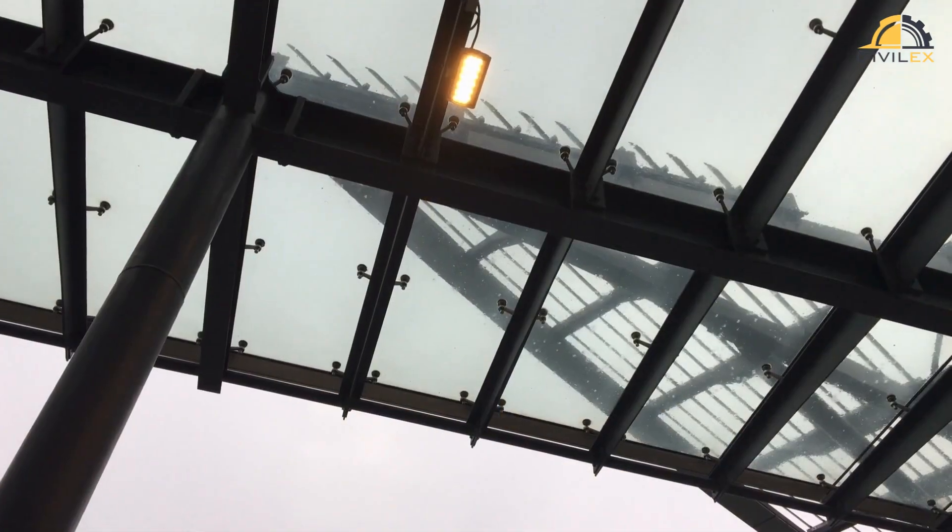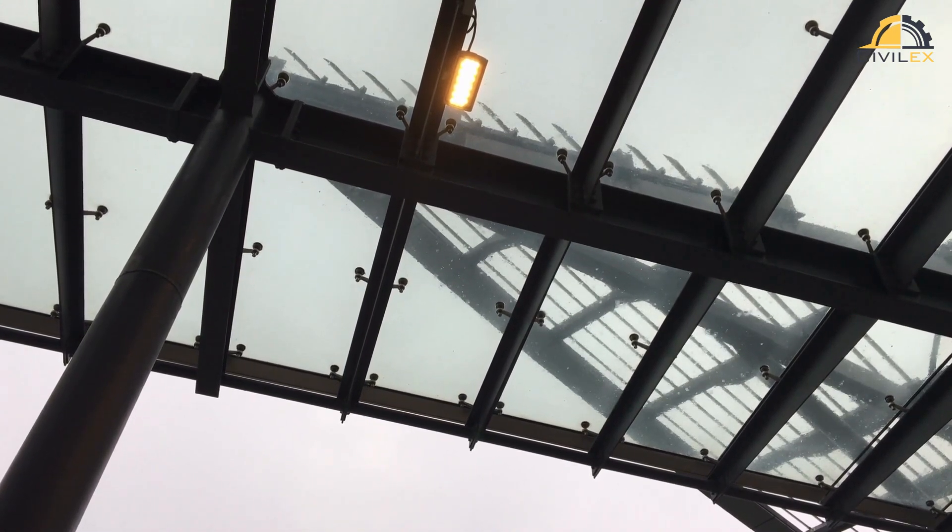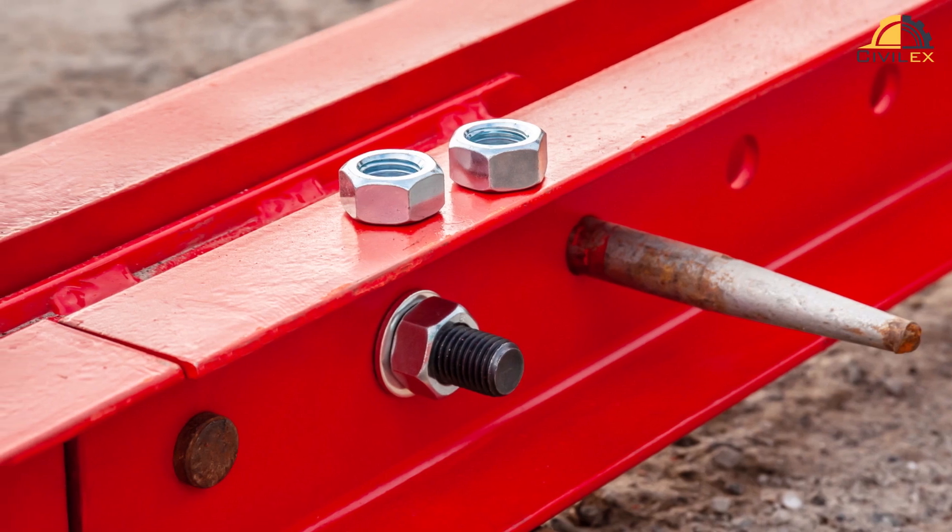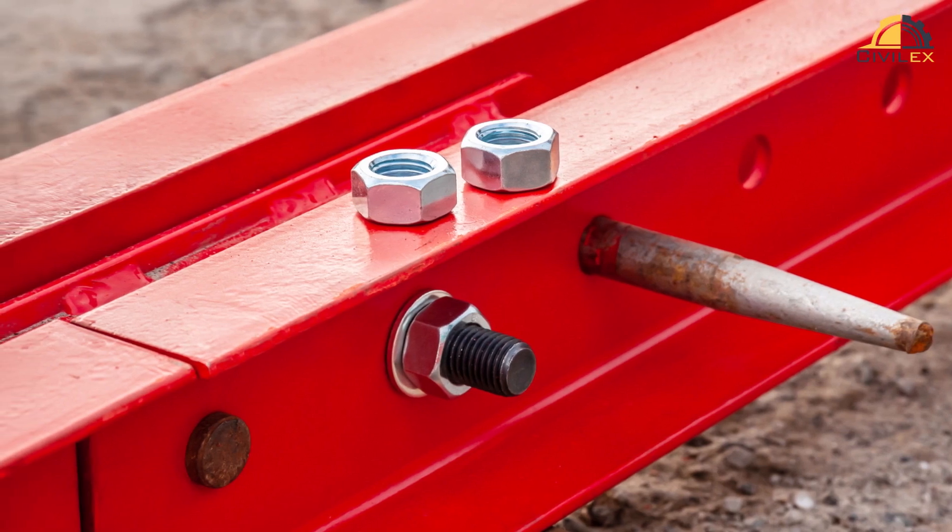Now let's explore some common types of connections you'll encounter in steel structures. Bolted connections involve using high-strength bolts to secure steel members together. They're versatile and suitable for shear, tension, and moment connections.